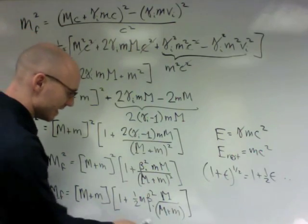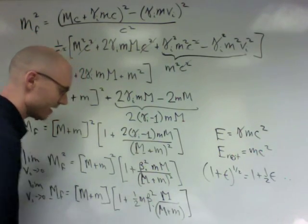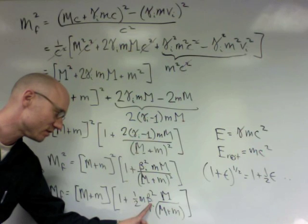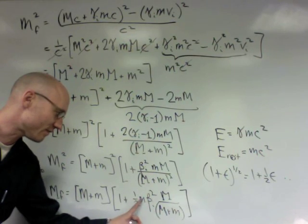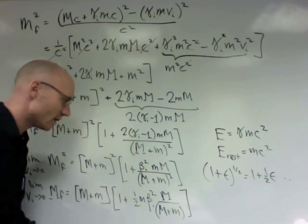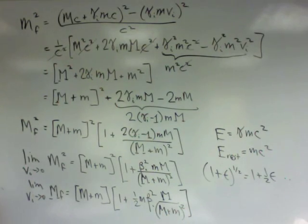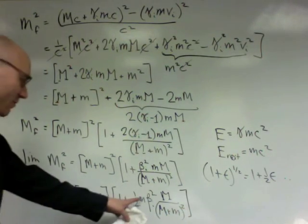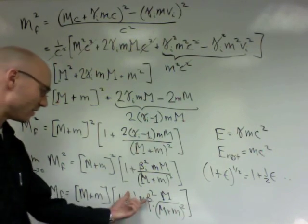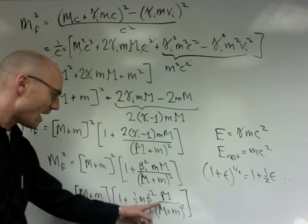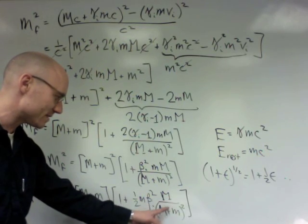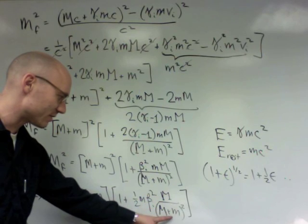What is this? What is this quantity? Look at this. This is one-half mv squared. See it's one-half mv squared. This is the original kinetic energy of the bullet in the low velocity limit. This is the original kinetic energy of the bullet, and then this is a geometric factor which depends on the ratio of the masses of the original block to the final block.